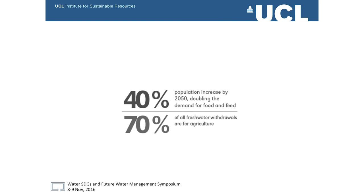I want to start with two numbers. By 2050, estimations show that the population will increase by 40%, which will result in a doubling of demand for food and feed. The second number: 70% of all freshwater is already used by agriculture today. These two numbers show how important it is to include agriculture in the discussion of sustainable water resources.